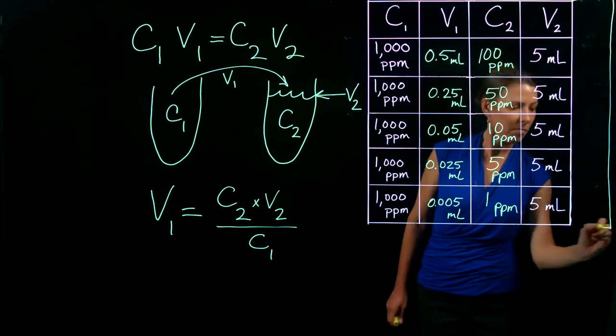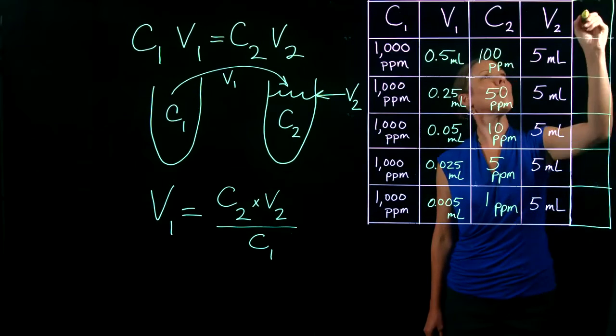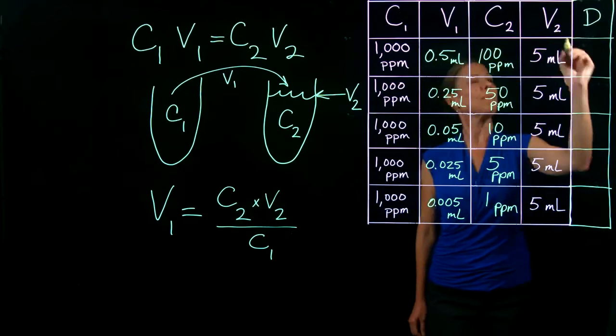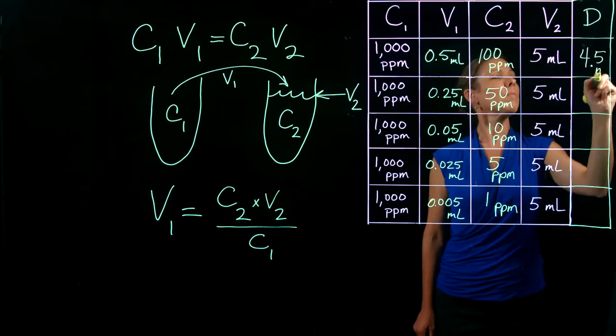To determine the required diluent volume for each standard, we subtract V1 from V2. For our 100 ppm standard, we will need 4.5 mils of diluent.